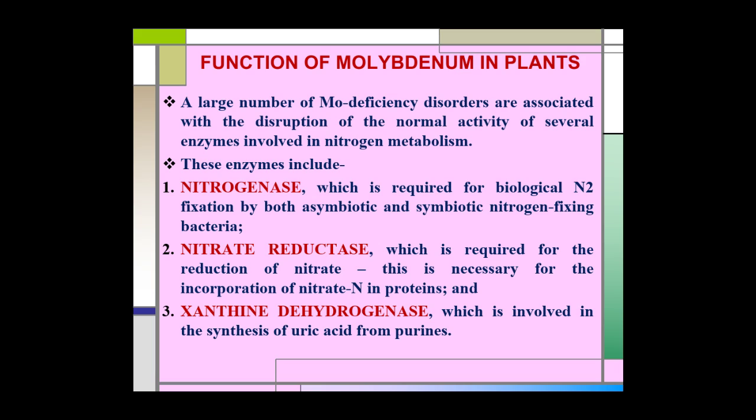A large number of molybdenum deficiency disorders are associated with disruption of the normal activity of several enzymes involved in nitrogen metabolism. The first enzyme is nitrogenase, which is required for biological nitrogen fixation by both asymbiotic and symbiotic nitrogen-fixing bacteria. The second enzyme is nitrate reductase, which is required for the reduction of nitrate and is necessary for the incorporation of nitrate into proteins. The third enzyme is xanthine dehydrogenase, which is involved in the synthesis of uric acids from purines.